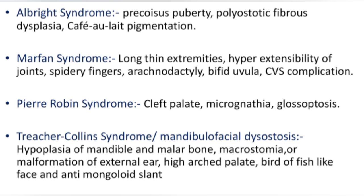Pierre Robin syndrome: cleft palate, micrognathia, and glossoptosis. Treacher Collins syndrome, also known as mandibulofacial dysostosis: hypoplasia of the mandible and malar bone, macrostomia or malformation of the external ear, high arched palate, bird or fish-like face, and anti-mongoloid slant.